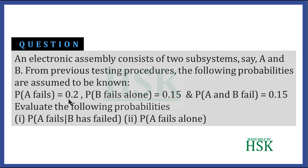Probability that A fails is 0.2, and we require the probability of A failing alone. To calculate the probability that B fails and the probability that A fails alone, we are going to use the Venn diagram to see how we can calculate these values.